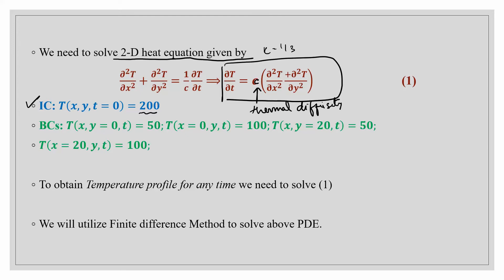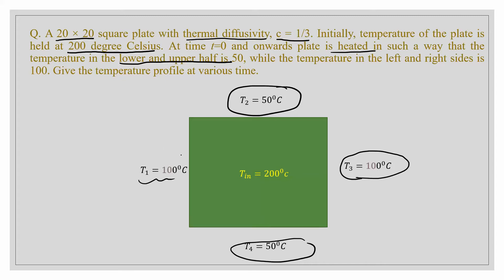At t=0, the entire plate is heated at 200 degrees Celsius — that is the state when we begin the experiment. After that, the boundary conditions are applied: the temperature at y=0 is 50°C, at x=0 is 100°C, at y=20 is 50°C, and at x=20 is 100°C. These are the boundary conditions written mathematically.